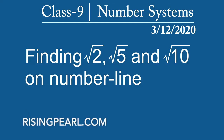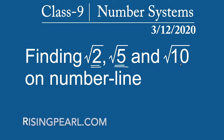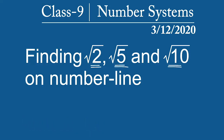Hello and welcome. Today is 3rd December 2020 and this is a daily math video for class 9. I hope you're following along. In the last two days we learned how to find a certain number of rational numbers between two given rational numbers, and in yesterday's video we learned how to find irrational numbers between two given rational numbers. Those video links are in the description box below. In today's video we are going to check out how to plot irrational numbers — square root 2, square root 5, and square root 10 — on the number line. Let's get started.